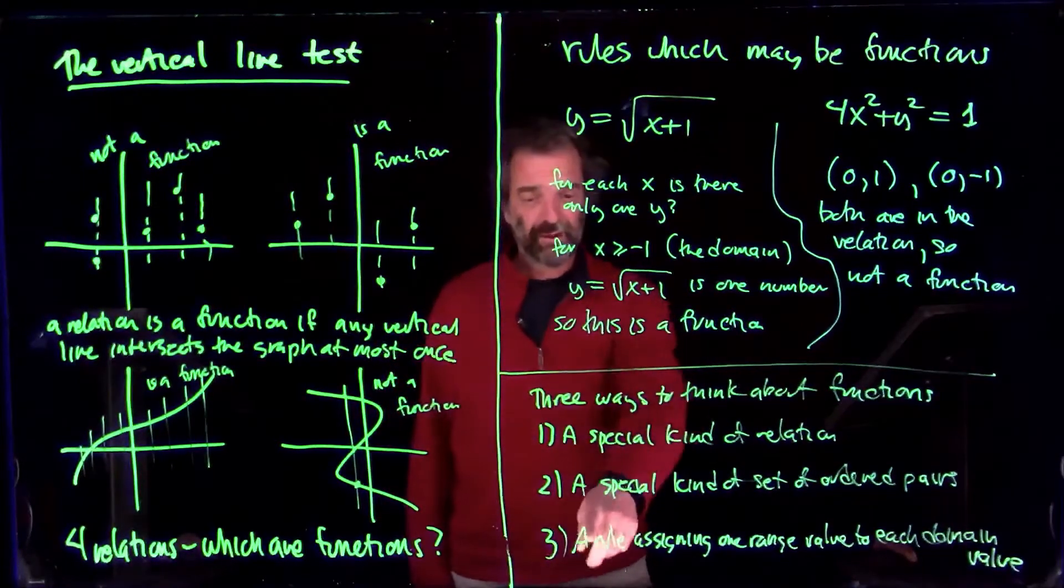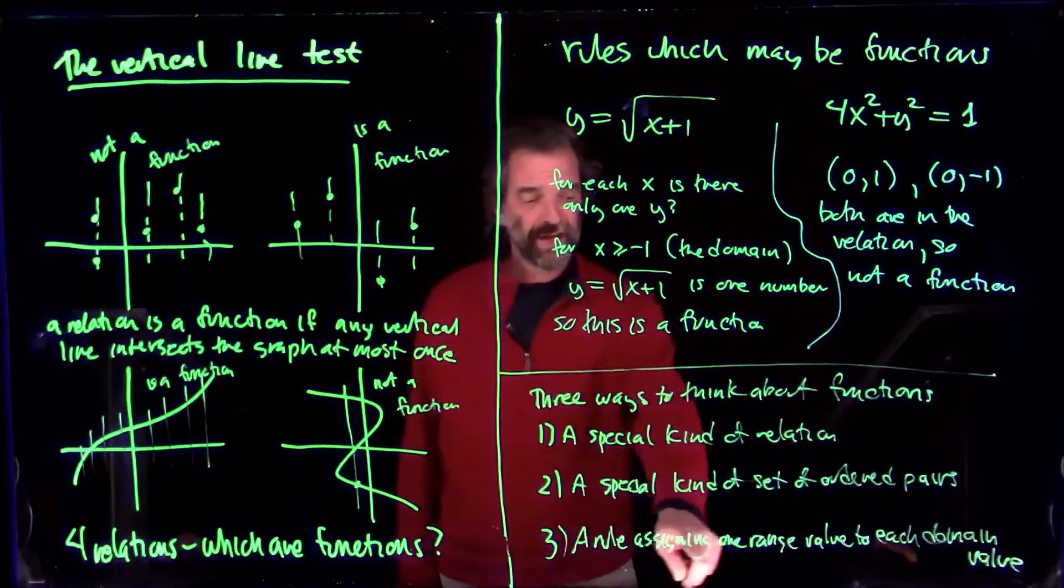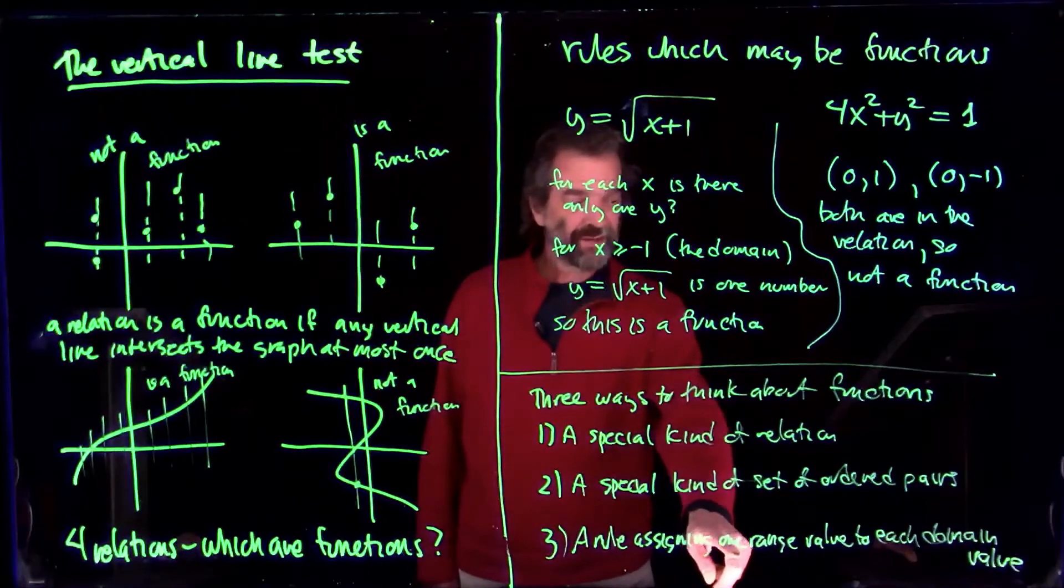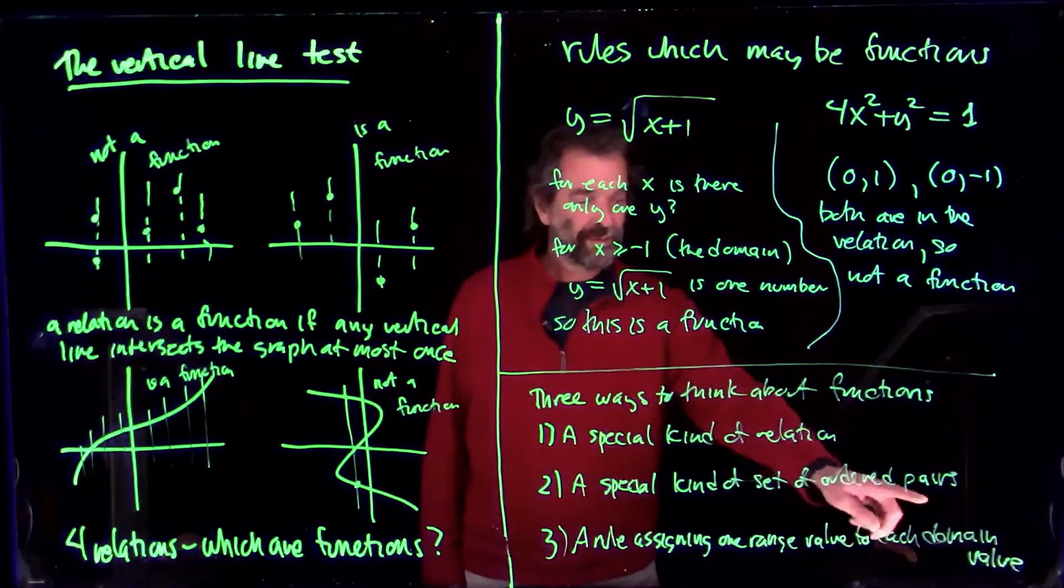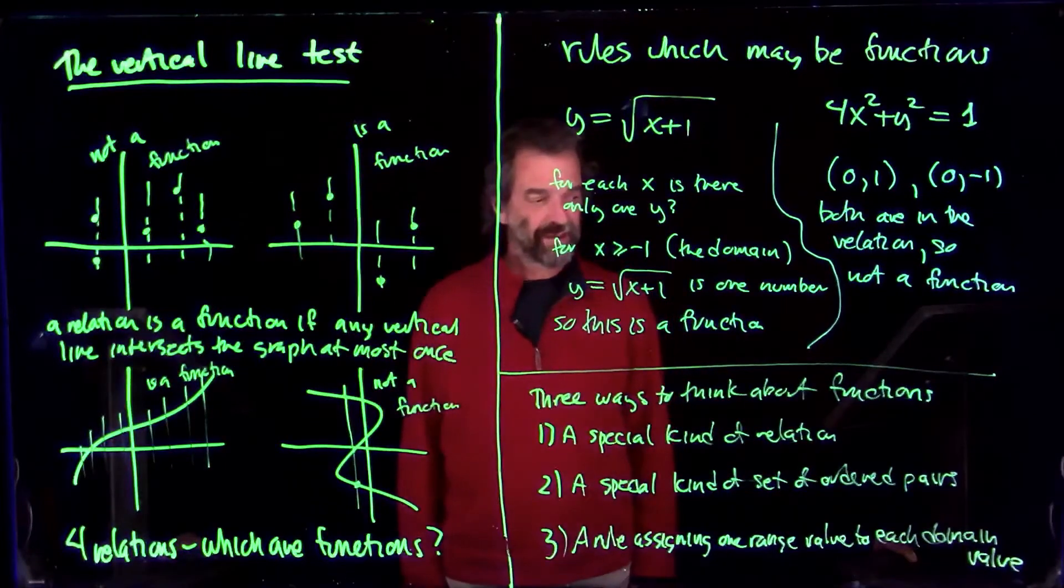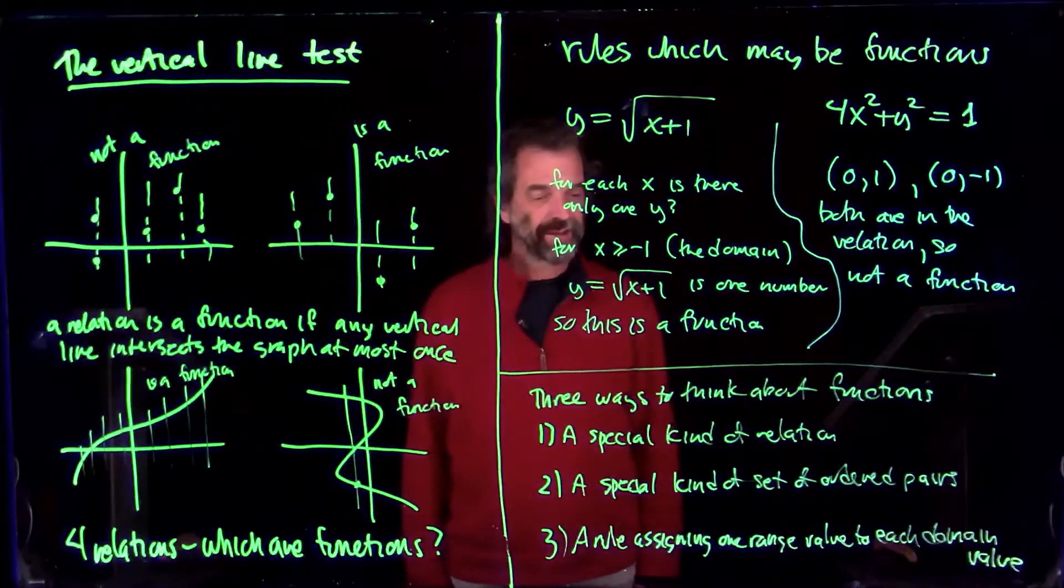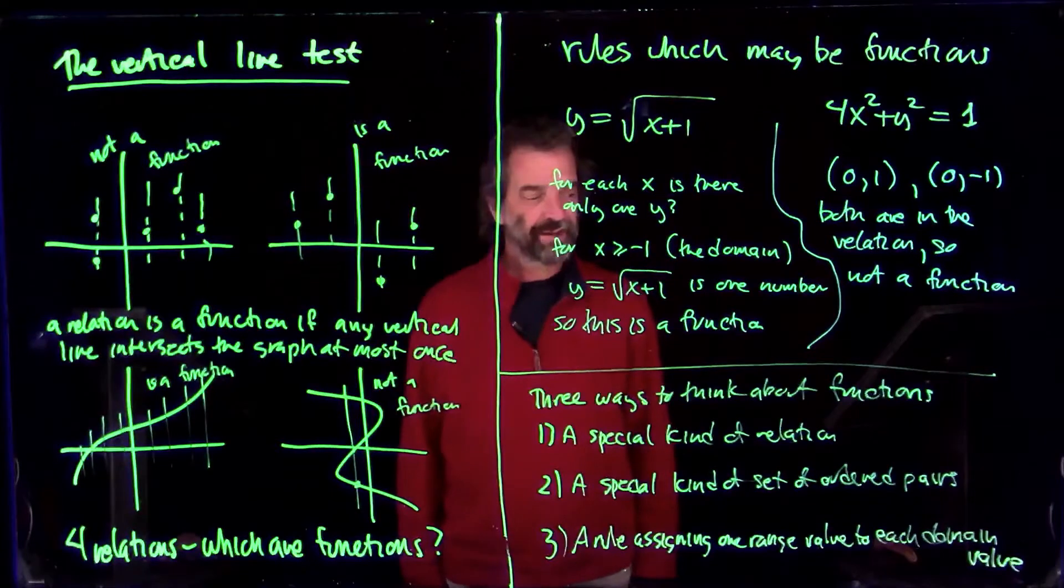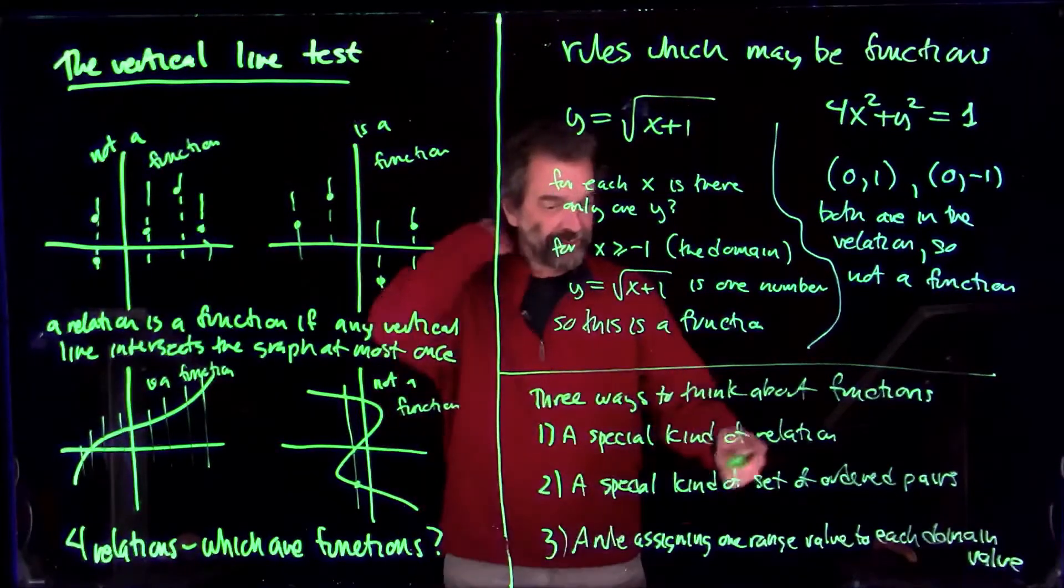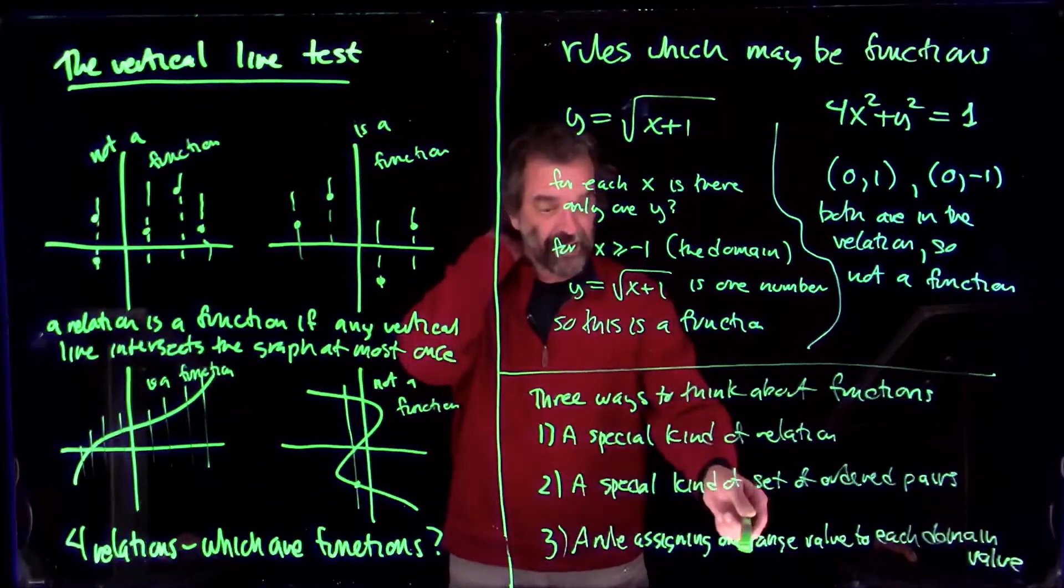A special kind of set of ordered pairs where the first coordinate is not repeated. And third, we can think of a function as a rule assigning one range value to each domain value. That's to say, each domain value only gets assigned to one number. They don't get all assigned to the same number, but each domain value is assigned to one range value, not two different range values.